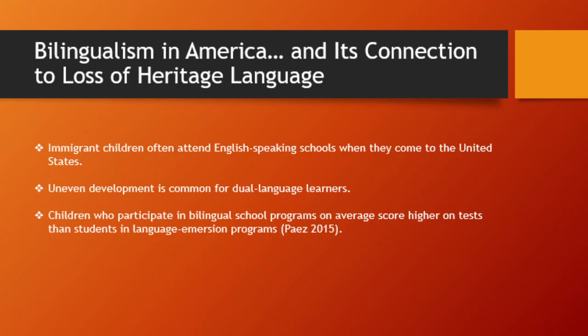Children who participate in bilingual school programs on average score higher on tests than students in language immersion programs. Immigrant children often attend English-speaking schools when they come to America. Uneven development is common for dual language learners. If the child does not continue learning the structure of their heritage language at home, they could lose proficiency in it. On the other hand, they learn English at school and become more comfortable with speaking, reading, and writing in English than with their heritage language. This contributes to the loss of interest and increase in assimilation that occurs in second generation children.